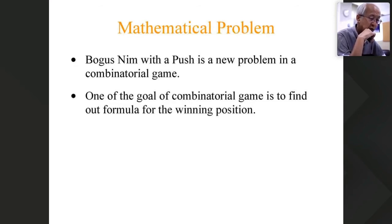And one of the goals of combinatorial game is to find out formula for the winning positions. So in this kind of a very simple game, the goal is to find the way to win the game.